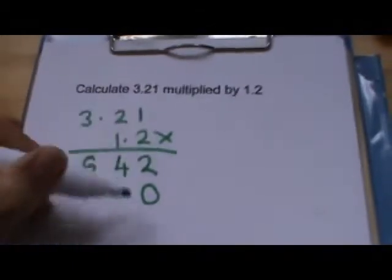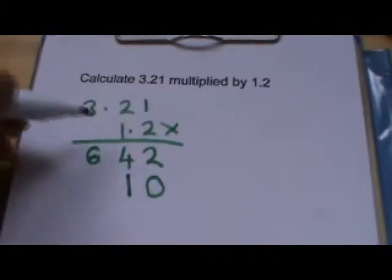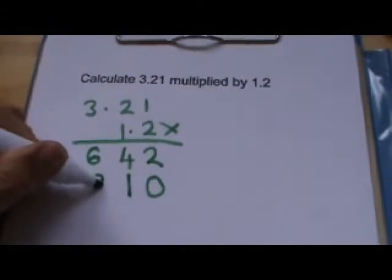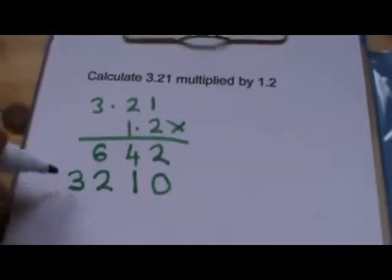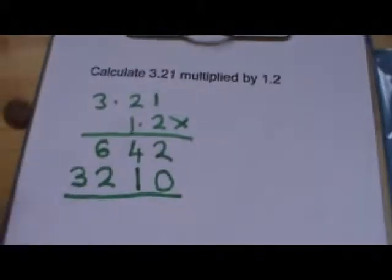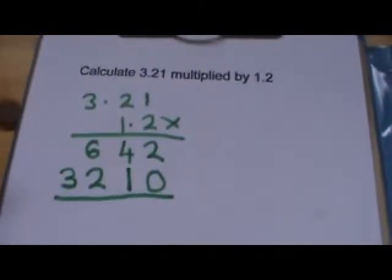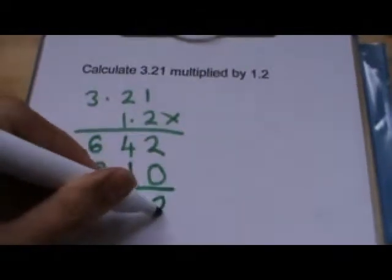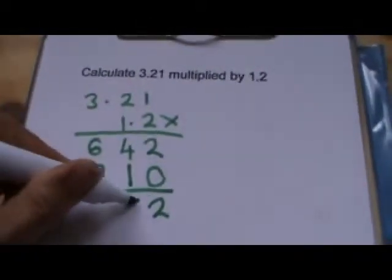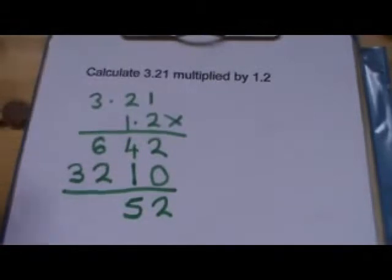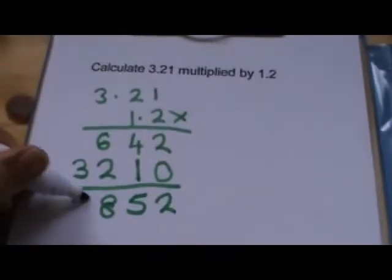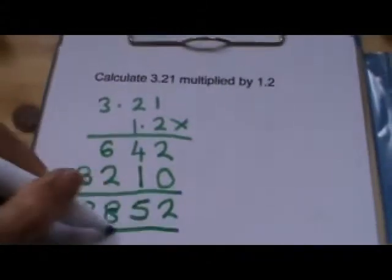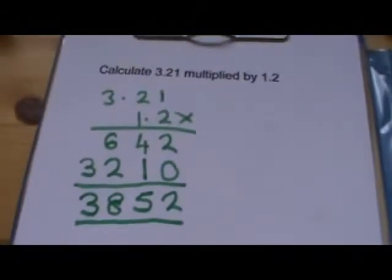And then 1 times 1 is 1. 1 times 2 is 2. 1 times 3 is 3. Then we need to add these two answers. So 2 and 0 is 2. 4 and 1 is 5. 6 and 2 is 8. And 3 is 3.